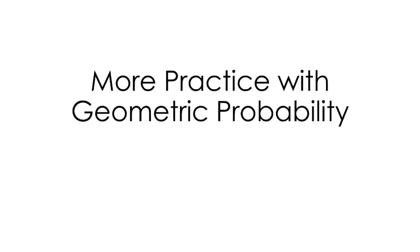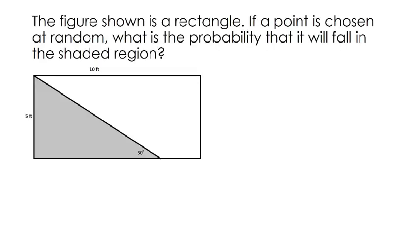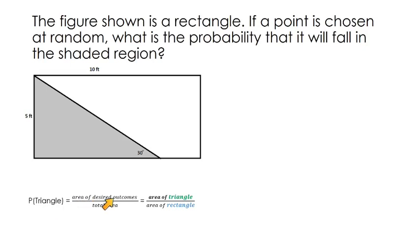In this video we're going to get a little more practice with geometric probability and do some problems that are a little more challenging. This first problem says the figure shown is a rectangle. If a point is chosen at random, what is the probability that it will fall in the shaded region? The probability of landing in the triangle is the area of the desired outcome — the area of the triangle — over the total area, which is the area of the rectangle.